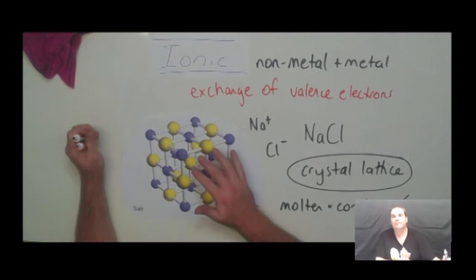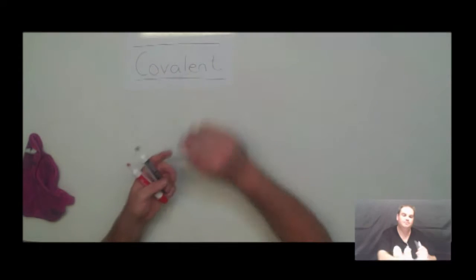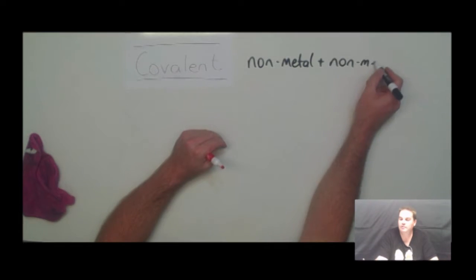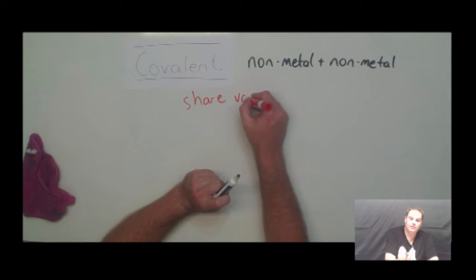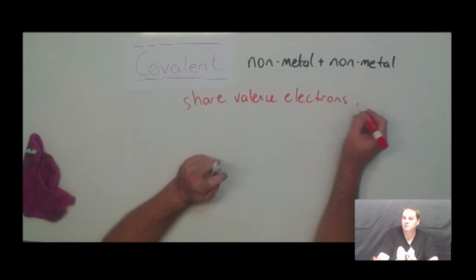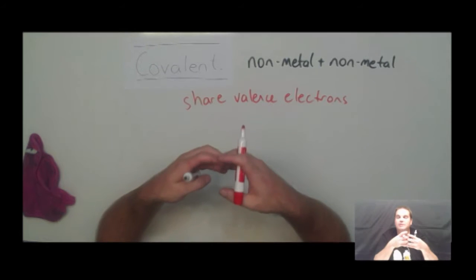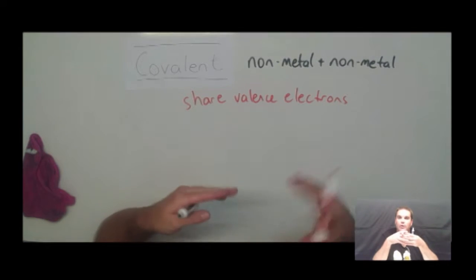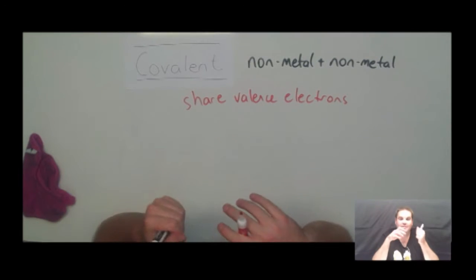The final type is covalent bonding. We've looked at metallic bonding between metal and metal, and ionic bonding between a metal and a non-metal. Covalent bonding is between a non-metal and another non-metal. What happens is that these non-metals get together and share their valence electrons. The two atoms come close together and the valence shell orbitals overlap so that they share their valence electrons in order to get a full outer shell — complete their octet. Sharing electrons isn't as strong as a full exchange, so covalent bonds are the weakest of the primary bonds.